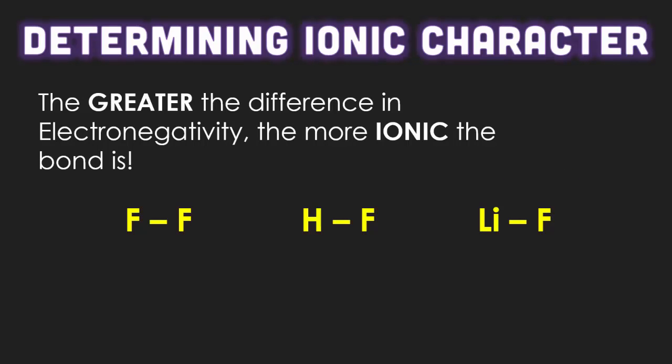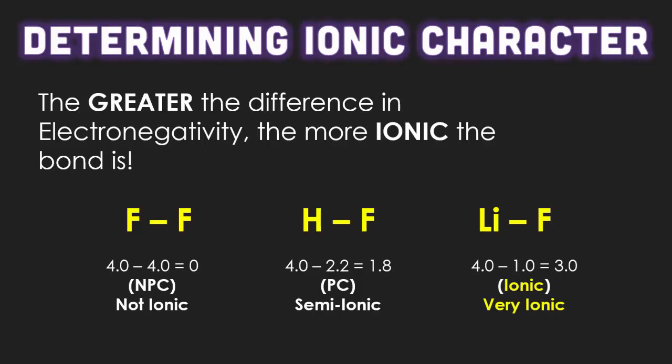There will be questions on the regents that ask you to determine the ionic character of a bond, which basically says the greater the difference in electronegativity, the more ionic the bonds are. Here are three different examples: we have a fluorine-fluorine bond, a hydrogen-fluorine bond, and a lithium-fluorine bond. When you take the difference of fluorine to fluorine, you should get zero, which is nonpolar covalent. Then when you take the difference of hydrogen and fluorine, you get something around 1.8, which is polar covalent, so somewhat ionic. And finally, you take the difference of lithium and fluorine, you get 3.0, which is clearly in the ionic zone. As you're noticing, all these bonds have fluorine in them, but as you change the electronegativity, they go up in difference, which means they become more ionic.